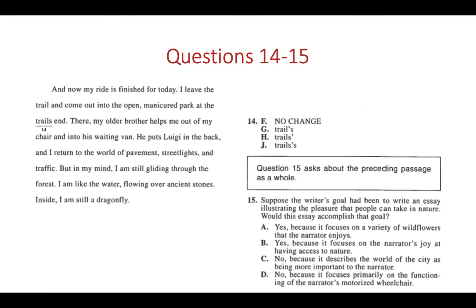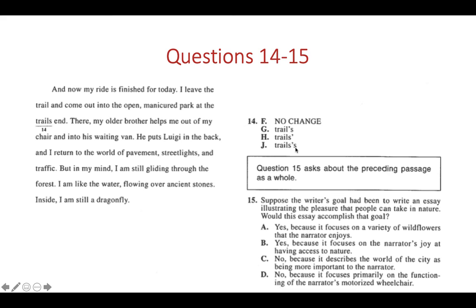Question 14 tests apostrophes: 'I leave the trail and come out into the open manicured park at the trail's end.' This is possessive — it belongs to the trail, so we need an apostrophe. F has no apostrophe, so it's wrong. H suggests multiple trails, but the text says 'the trail,' so there's only one. You'd only use S-apostrophe-S if the word naturally ends in S, like a name such as 'James's.' The correct answer is G — trail's.